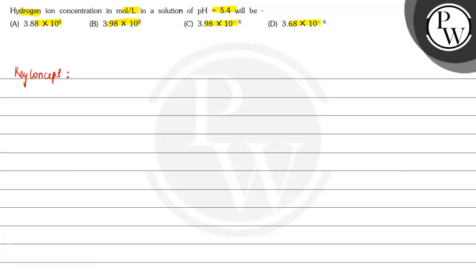So here we will start our solution with the key concept. As we know, pH is equal to negative log of H+ ion concentration. That means H+ ion concentration is equal to 10 raised to the power negative of pH.